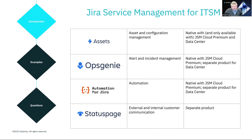Lastly, we're going to talk a little bit about Status Page. This is a completely separate product, not included in any tier of JSM. It is an Atlassian product but it's an add-on, and it serves as an internal and external communication solution. Atlassian themselves actually use this to communicate status updates to products in their ecosystem, so you can check out their status page to see how they're using it.